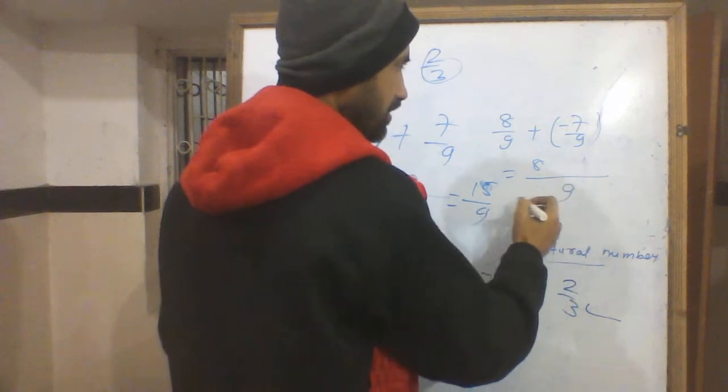Now if we have 8/9 minus 7/9, the rule applies the same way. It's 8 minus 7, which gives us 1. So the answer is 1/9.